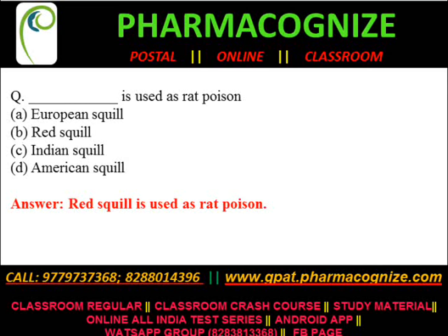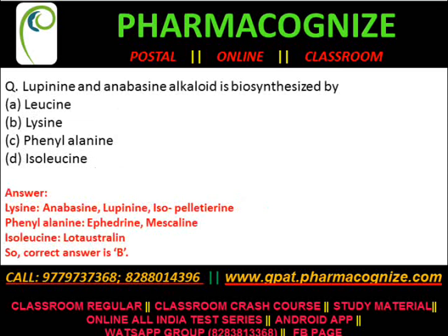Hello everyone, you are watching Pharmacognize YouTube channel. Today we are going to discuss some questions related to GPAT and NIPER exam. First question: which of the following is used as a red poison? Options are: A) European squill, B) Red squill, C) Indian squill, D) American squill. Answer is Red squill.